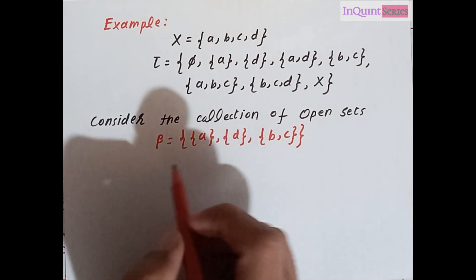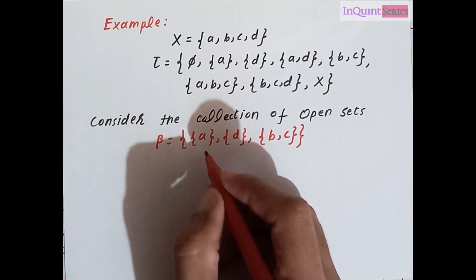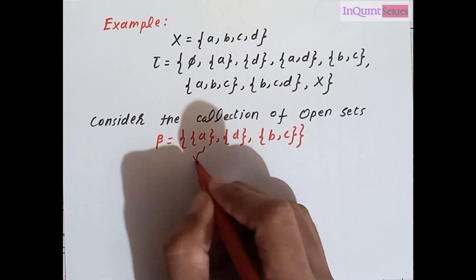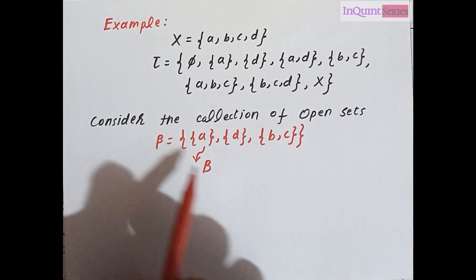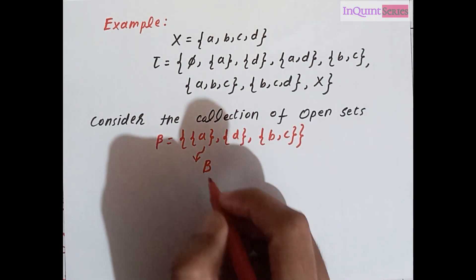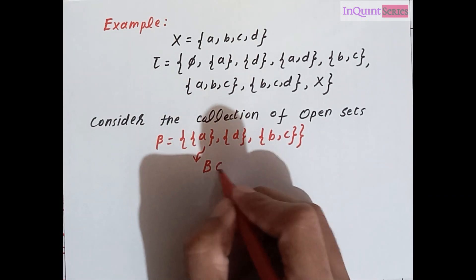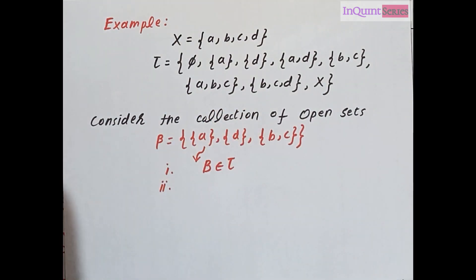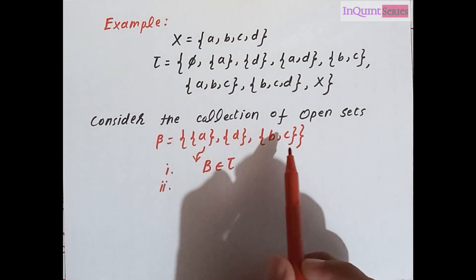The first condition is that the elements in that collection beta are from our topology tau — we name each element as B, and each B belongs to tau. The second condition is that we can write the other members of the topology as a union or finite intersection of the elements of that collection beta.